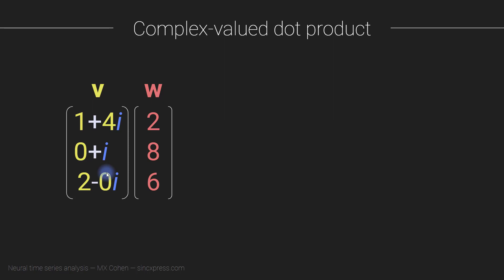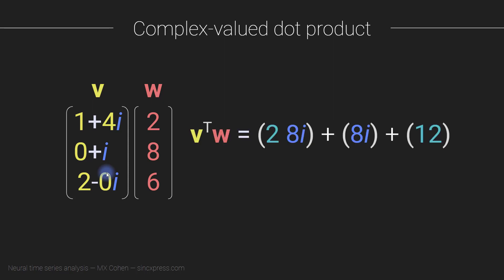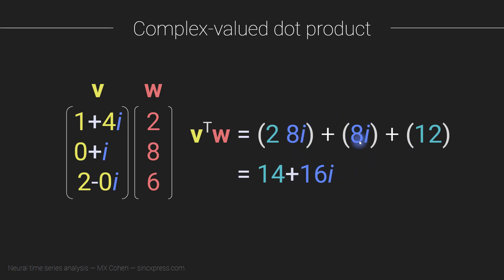How do we compute the dot product between these two vectors? It turns out it's really simple — it's exactly the same as the regular dot product: element-wise multiplication and then sum. If you're doing this by hand you have to be mindful of the algebra, for example two times eight i gives you eight i. This can then be reduced to the single complex number 14 plus 16i, where the 14 comes from 2 and 12, and the 16i from the 8i terms.